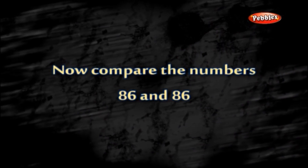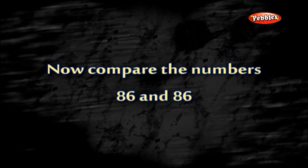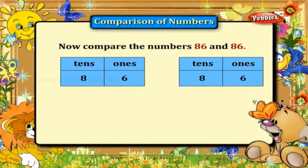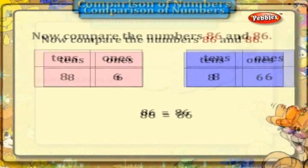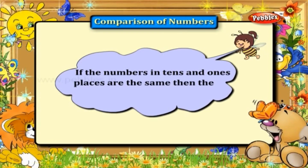Now compare the numbers 86 and 86. Yes, they are equal. 86 is equal to 86. If the numbers in the tens and ones places are the same, then the numbers are equal.